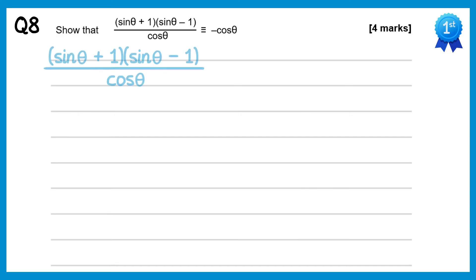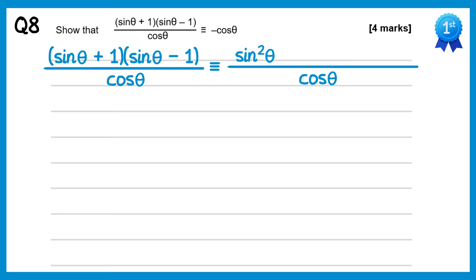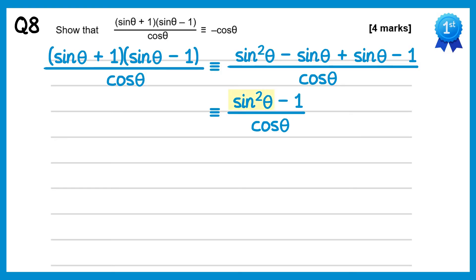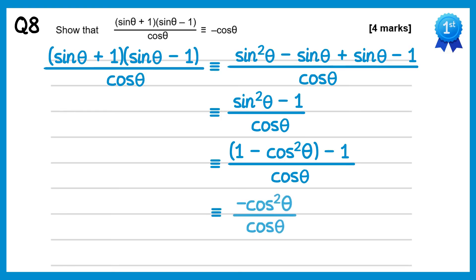For this question we'll write down the left hand side and expand the brackets on the top, all over cosθ. Expanding: sinθ times sinθ = sin²θ; sinθ times negative 1 = negative sinθ; 1 times sinθ = plus sinθ; 1 times negative 1 = negative 1. The two middle terms cancel, leaving sin²θ minus 1 over cosθ. Replacing sin²θ with 1 minus cos²θ gives 1 minus cos²θ minus 1, and the 1's cancel, leaving negative cos²θ over cosθ. One cosθ on top cancels with the one on the bottom, giving negative cosθ, which is what we wanted to show.